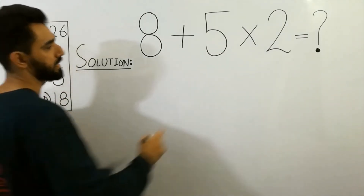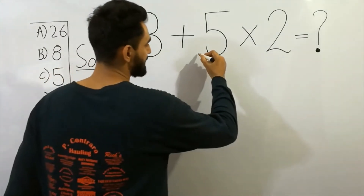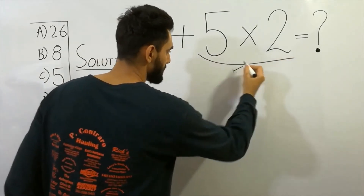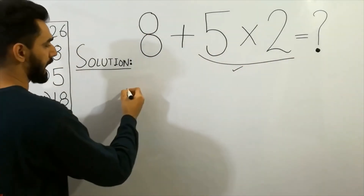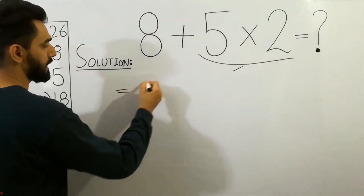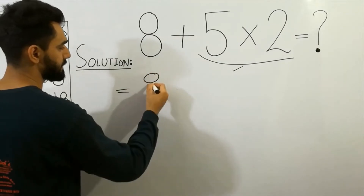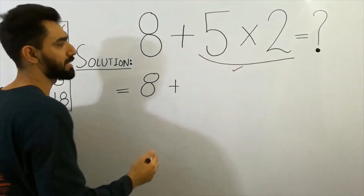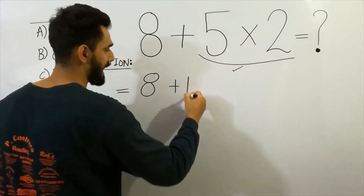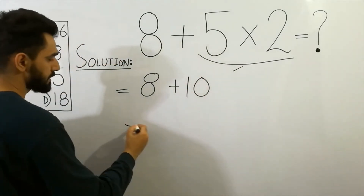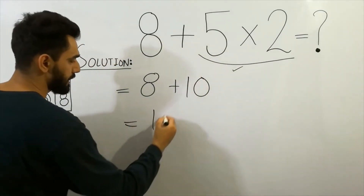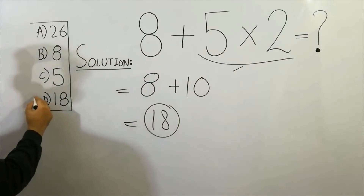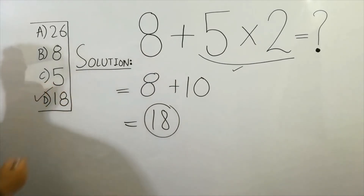You know that multiplication is always the first step. So we write: eight plus five multiplied by two will be ten, and ten plus eight will be eighteen. So eighteen — option D is correct.